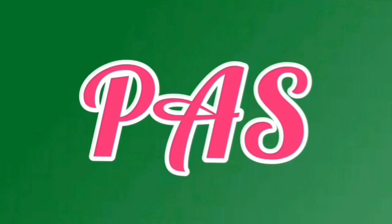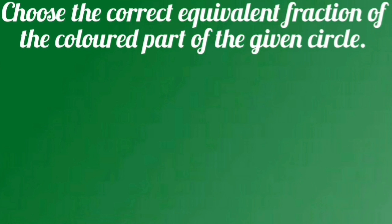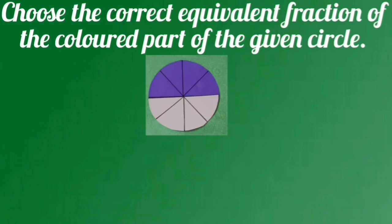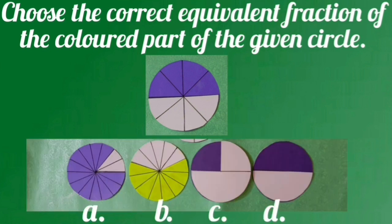Now, as you are all preparing for the pass exam, here is a related question: Choose the correct equivalent fraction of the colored part of the given circle. You are given 4 circles with different colored portions. In option A, the colored part is not the same as the given circle, so it is not an equivalent fraction. In option B, the colored portion is also not the same, so it is not an equivalent fraction either. In option D, the colored portion is the same as the given circle, so option D is correct and it is the equivalent fraction.